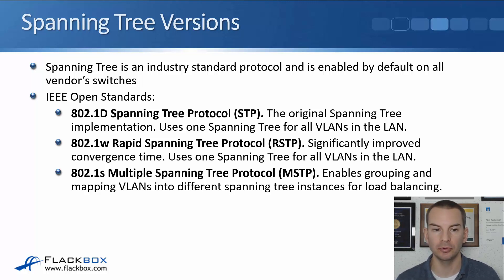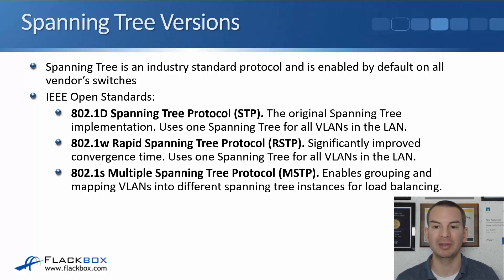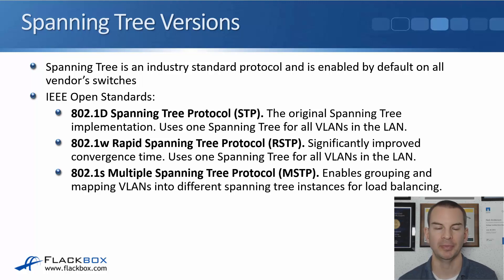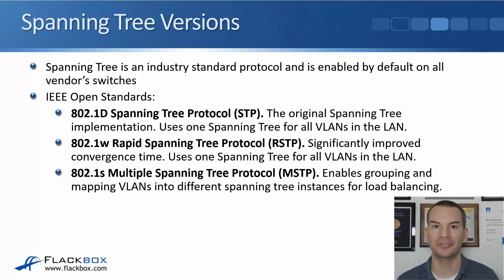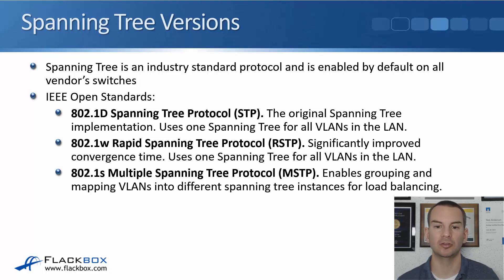That was improved with 802.1w, which is Rapid Spanning Tree. It significantly improved the convergence time. With 802.1d, it can take up to 50 seconds for an interface to make sure there are no loops and transition into the forwarding state. With Rapid Spanning Tree, that gets down to typically a few seconds.